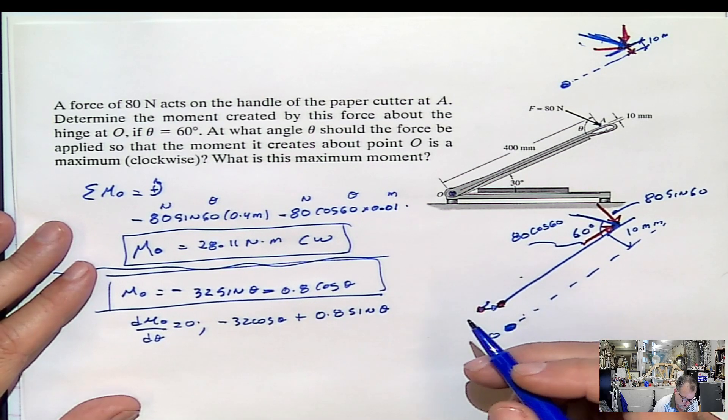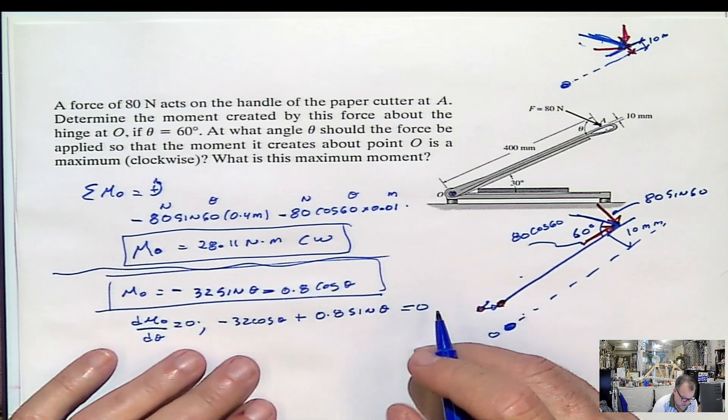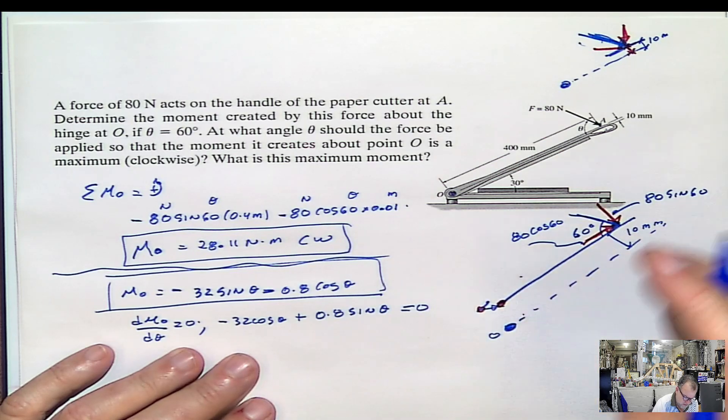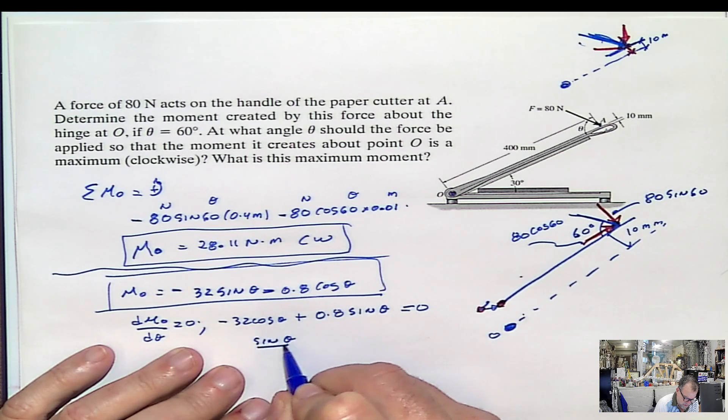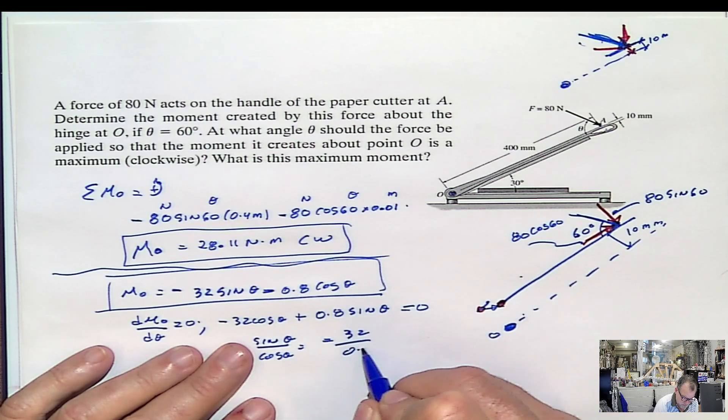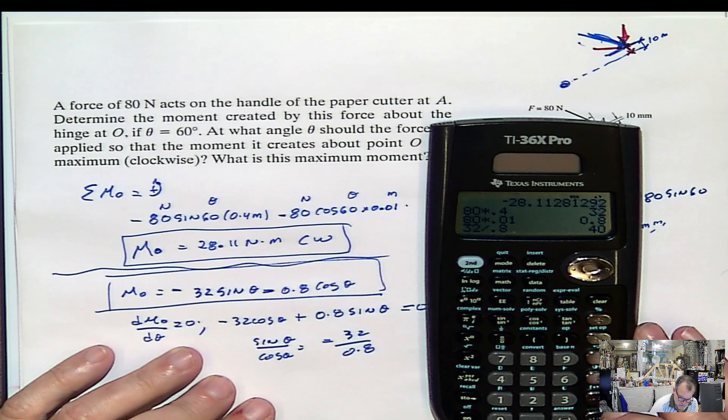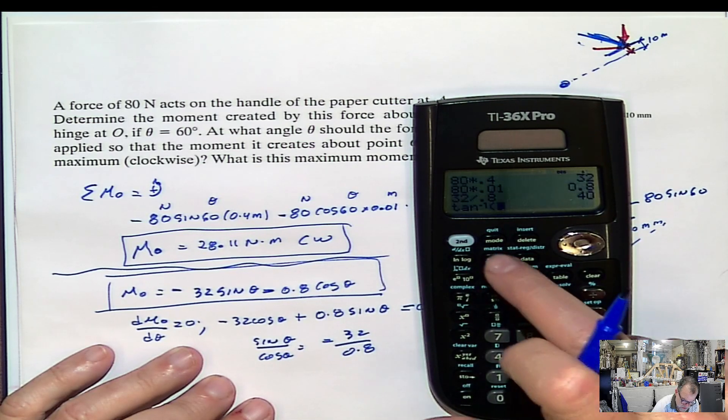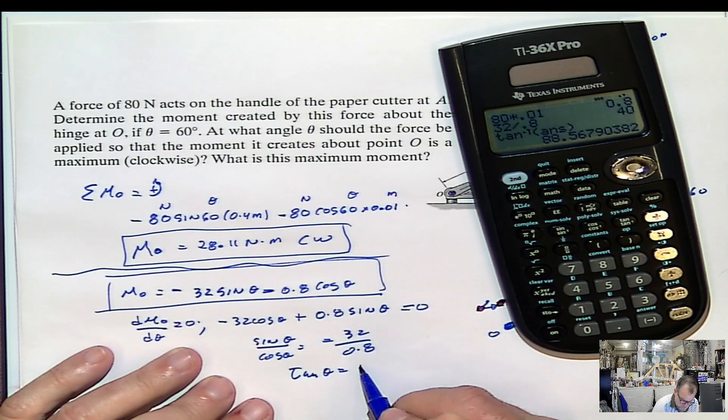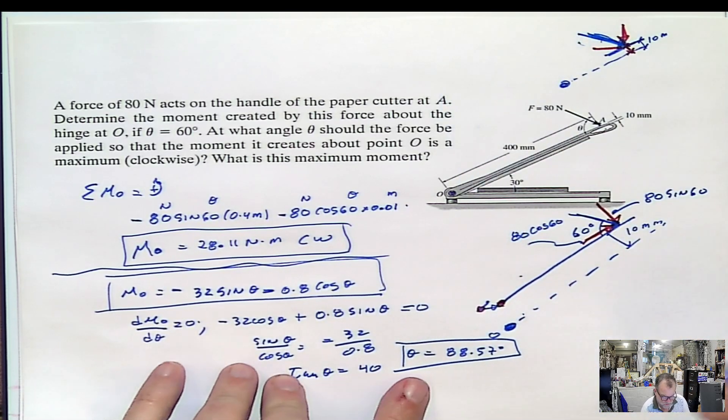I think that should be what we are looking for. That would be the function that we are using. Now, this function, when we make it 0, then we have to solve for the angle. What would be the angle? The angle would be, I pass this to the other side and divided by this. So it's going to be sine theta divided by cosine theta. It's going to be equal to 32 divided by 0.8. So the tangent theta will be 32 divided by 0.8, 40. That means that the inverse tangent of that should be 88.57. So theta will be 88.57 degrees. You see? 88.57 degrees.